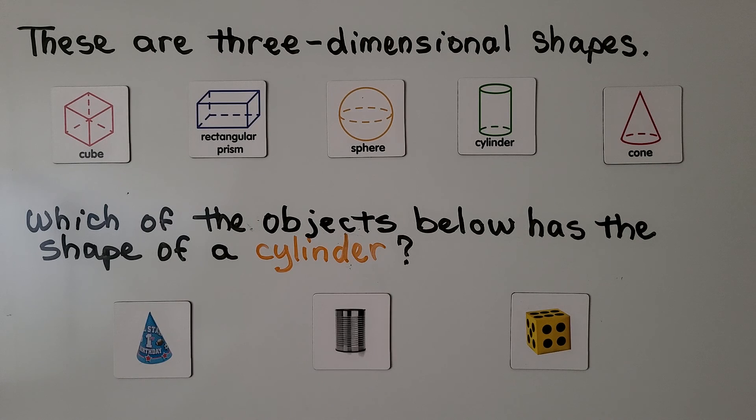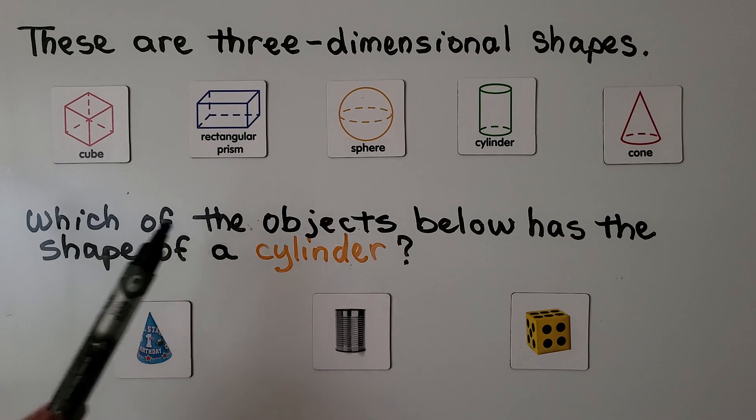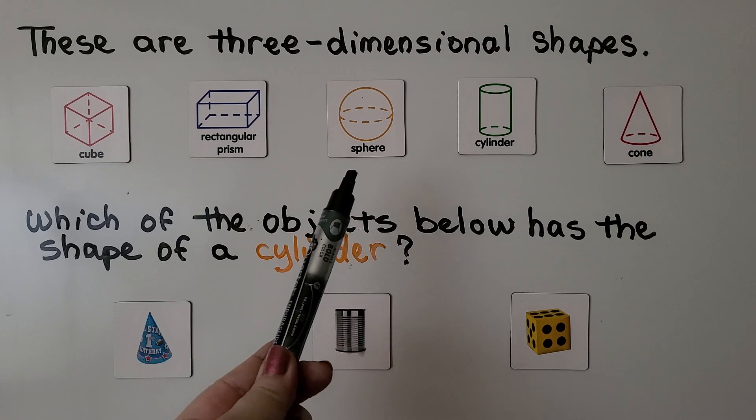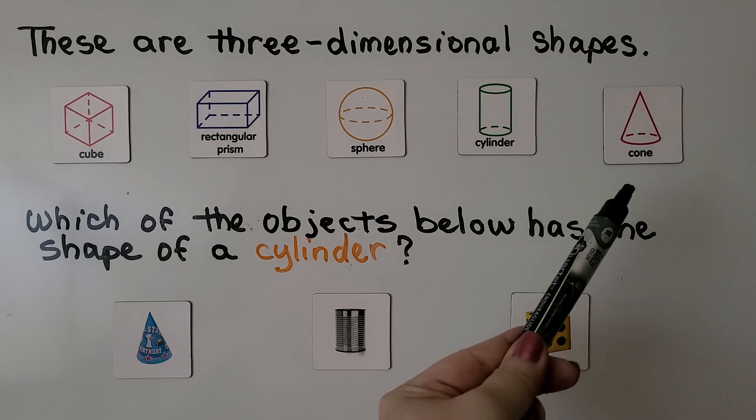These are three-dimensional shapes. We have a cube, a rectangular prism, a sphere, a cylinder, and a cone.